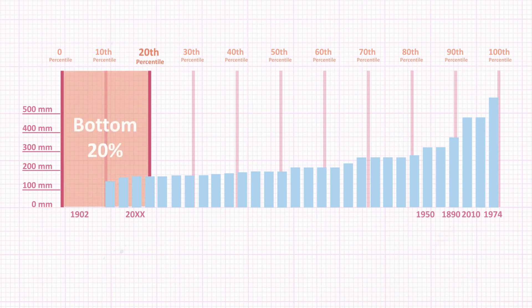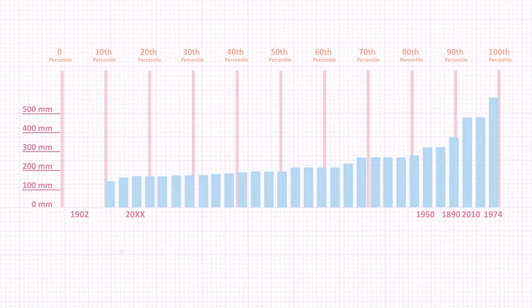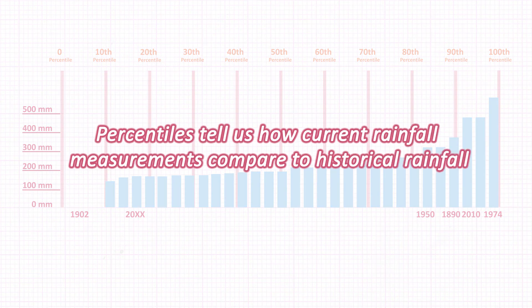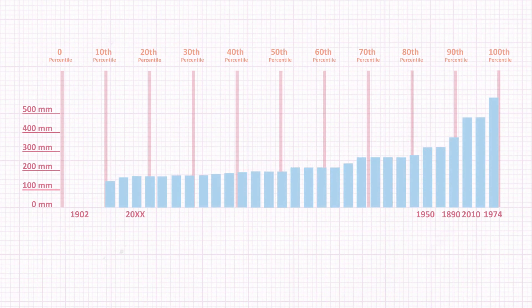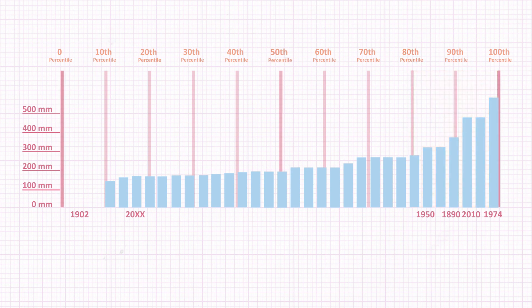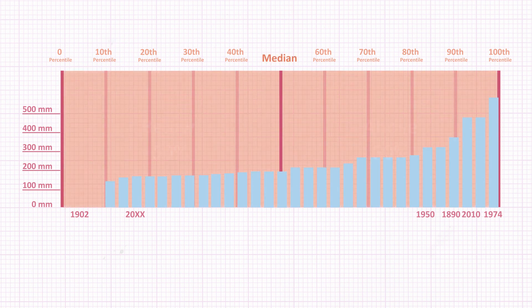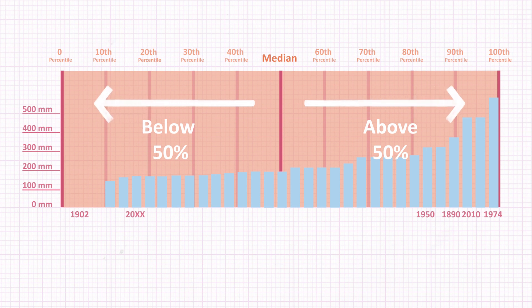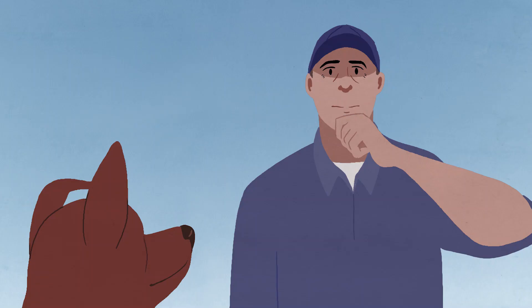What? In recorded history? That's right. Percentiles tell us how current rainfall measurements compare to historical rainfall. Pretty handy, eh? So that means at the other end of the scale, the top 20 percent of rainfall years fall within the 80th to the 100th percentile. Yep, you've got it. And the middle value of these ranked measurements is in the 50th percentile, which is also called the median, where 50 percent of the values are below the median and 50 percent are above. Yeah, they were just talking about the median on the radio.